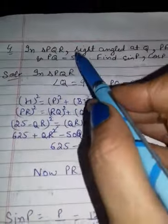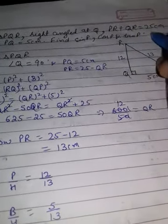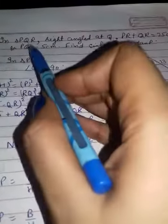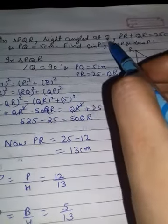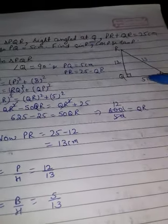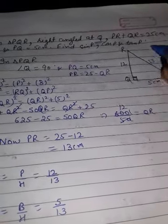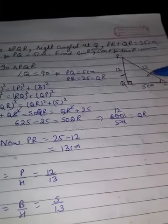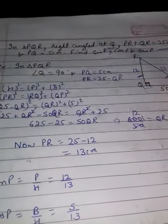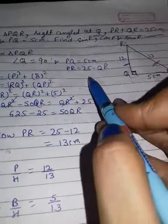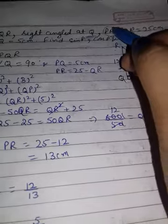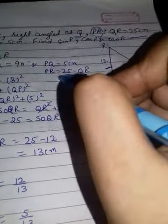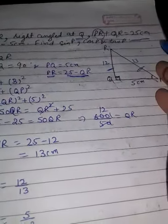Next: in triangle PQR, right angle at Q, PR plus QR is equal to 25 cm, PQ is equal to 5 cm. Find sin P, cos P, and tan P. You have been given a right angle triangle at Q — draw triangle PQR with angle Q as 90 degrees. PR plus QR sum means these two sides add up to 25. This side PQ is given as 5.